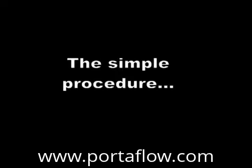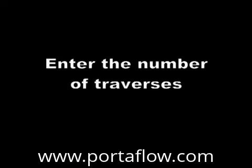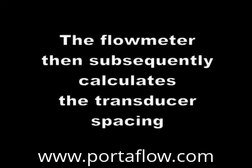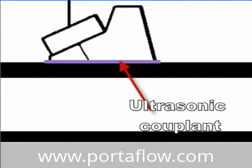All of this complexity boils down to a pretty simple procedure. Step 1: enter the pipe material, diameter and wall thickness, or nominal diameter and pipe schedule. Step 2: enter the fluid type. Step 3: enter the number of traverses. The flow meter then calculates the transducer spacing. We then place the transducers on the outside of the pipe at the spacing calculated by the flow meter. We also need to place an ultrasonic couplant between the transducers and the pipe, because an air gap will stop the ultrasonic signal.